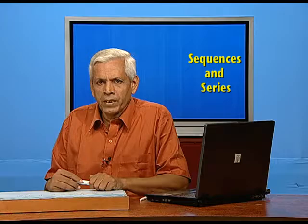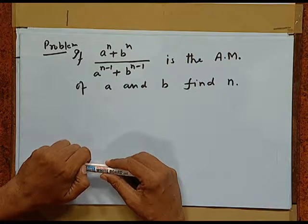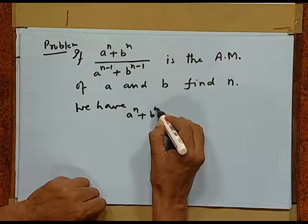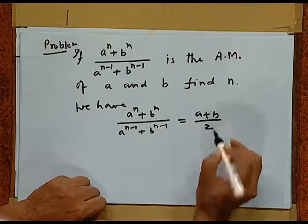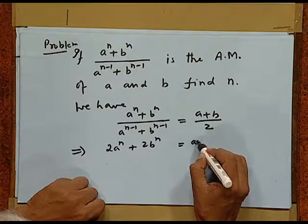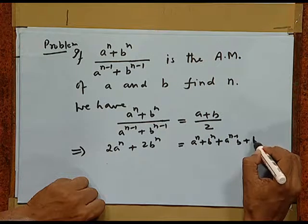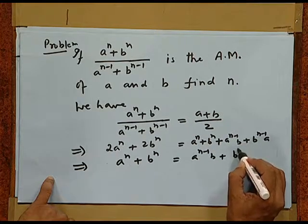Now, here is a problem. If a raised to power n plus b raised to power n upon a raised to n minus 1 plus b raised to n minus 1 is equal to the AM of a and b, that is a plus b by 2, we need to find n. This implies 2 times a to the n plus 2 times b to the n equals a raised to n minus 1 times a plus b plus b raised to n minus 1 times a plus b. Again, it implies a to the n plus b to the n equals a to the n minus 1 times b plus b to the n minus 1 times a.